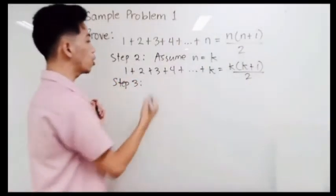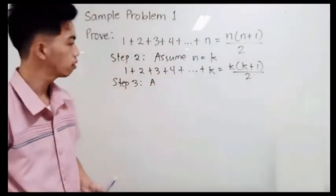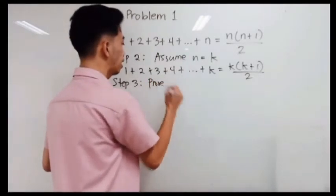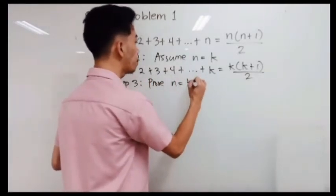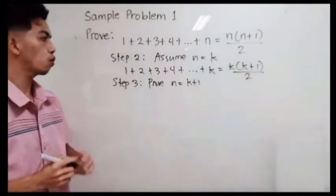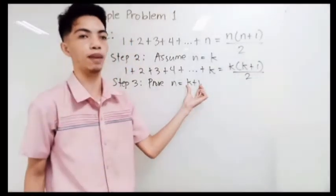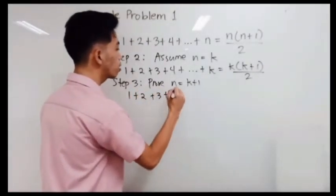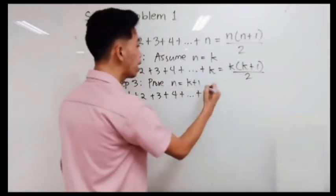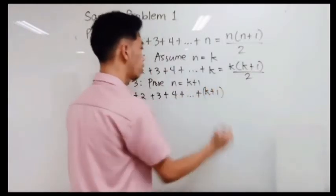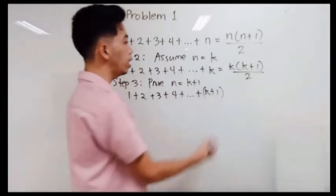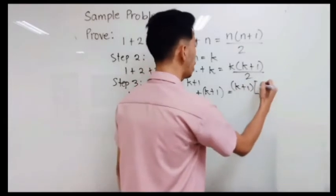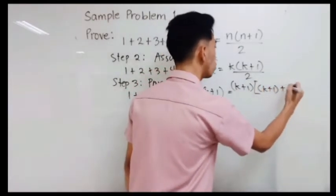Step number 3: we have to prove that this is true for n is equal to k plus 1. So we replace all n with k plus 1. We have 1 plus 2 plus 3 plus 4 plus all the way to k plus 1 is equal to k plus 1 multiplied by k plus 1 plus 1, all over 2.